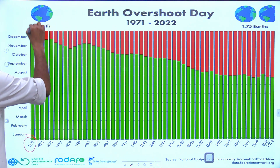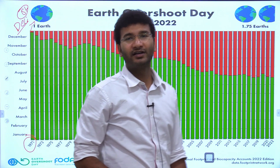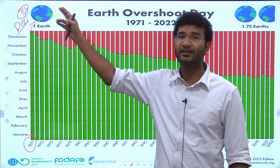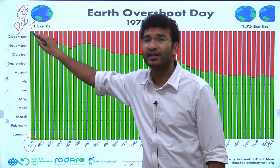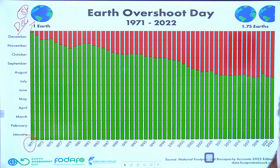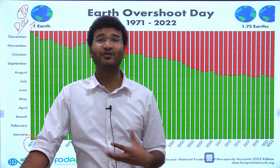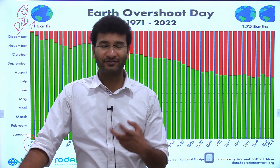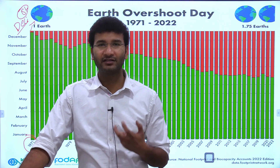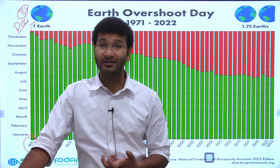In 1971, Earth Overshoot Day was December 1st. Slowly it has moved to July 28 today. At this rate of consumption, we would need almost 2 Earths. Earth is no longer in a position to bear the amount of resources we are using. When Earth cannot bear this load, it changes its climate — making climate change inevitable.